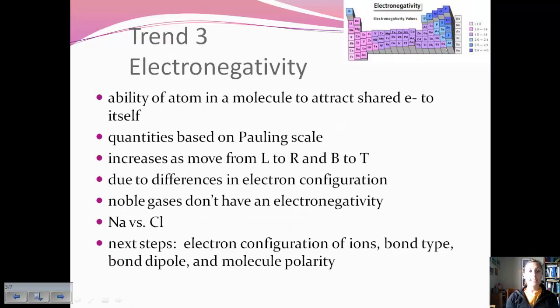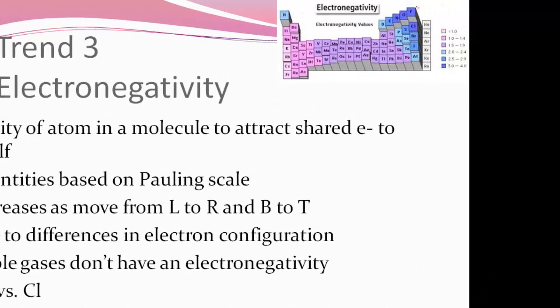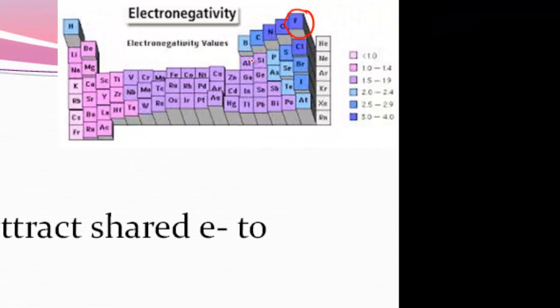Okay, so our third trend is electronegativity. And this is the ability of an atom in a molecule to attract shared electrons to itself. And so within a bond, the next section we're going to discuss are the types of bonds. And so how are those electrons being shared within that bond? And so these quantities are based on the Pauling scale, which was put together by Linus Pauling, who's a famous chemist. And he noticed that fluorine was very electronegative, meaning it really attracted those electrons to itself in a bond. And so he gave it a value of 4 and then scaled every other element from that value.